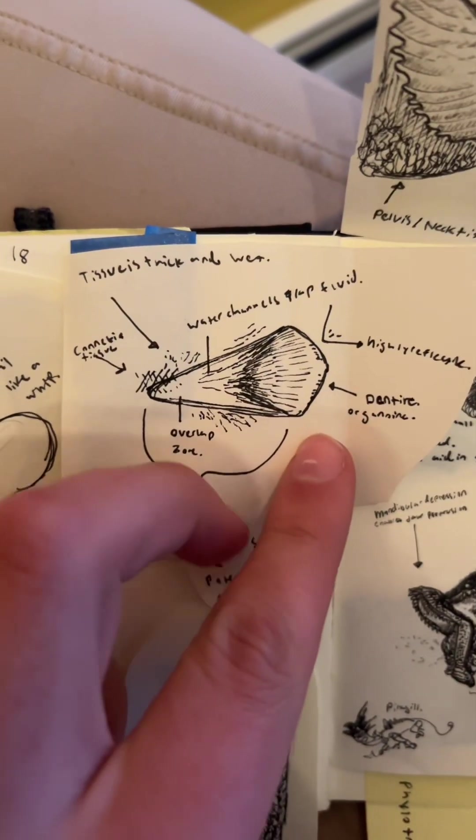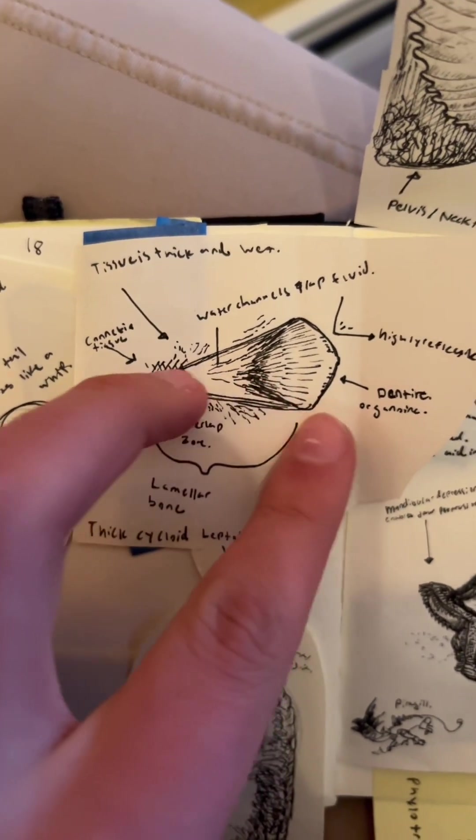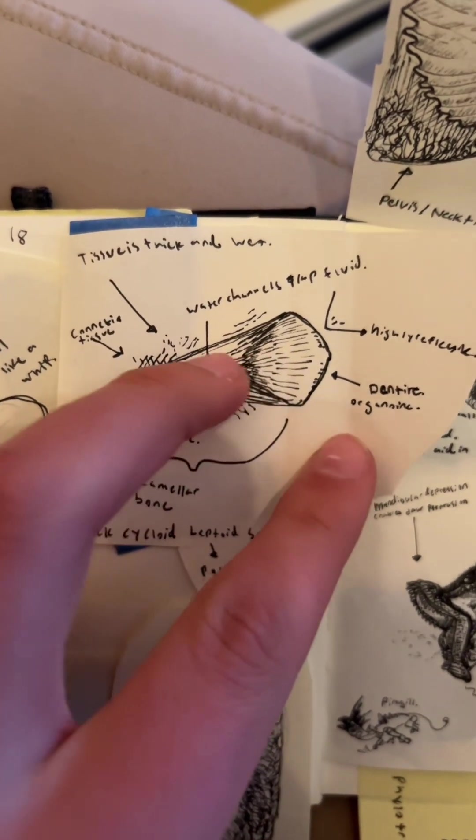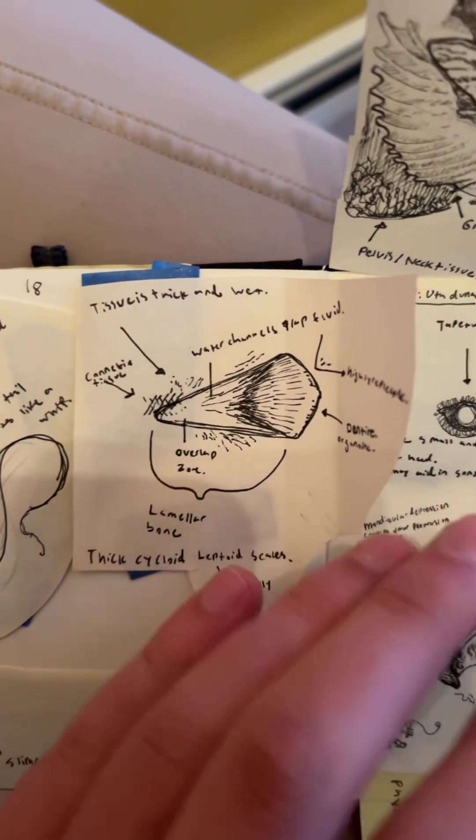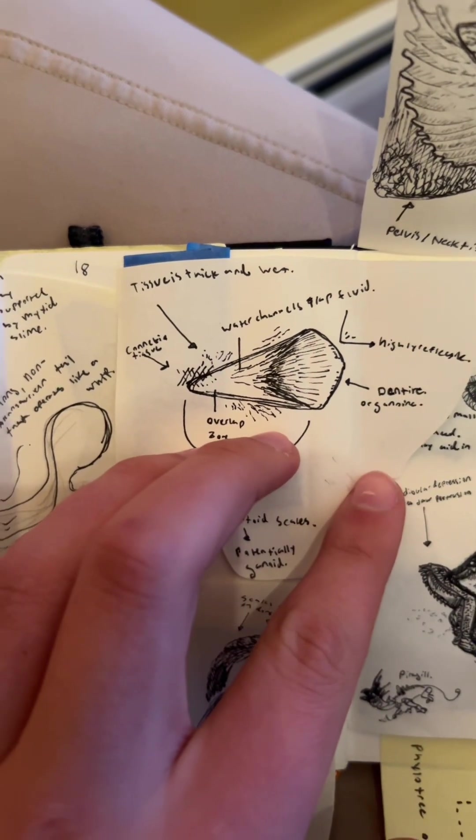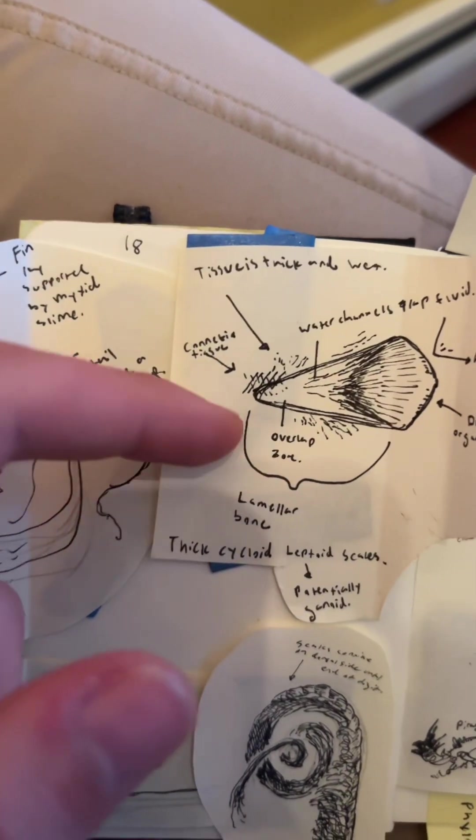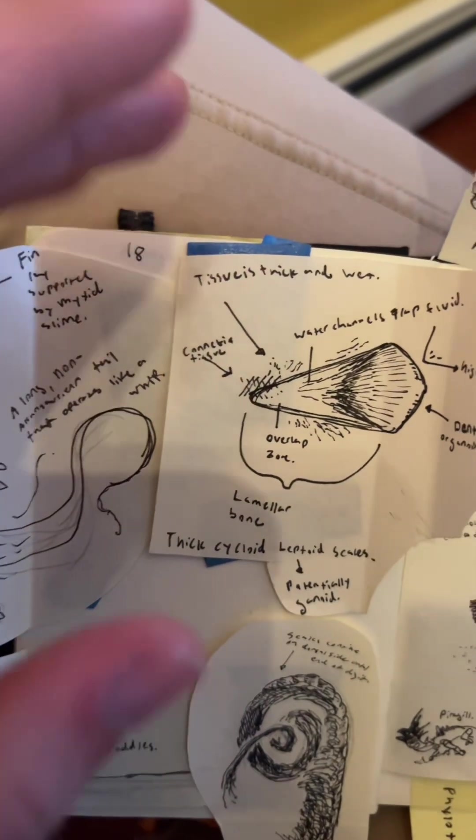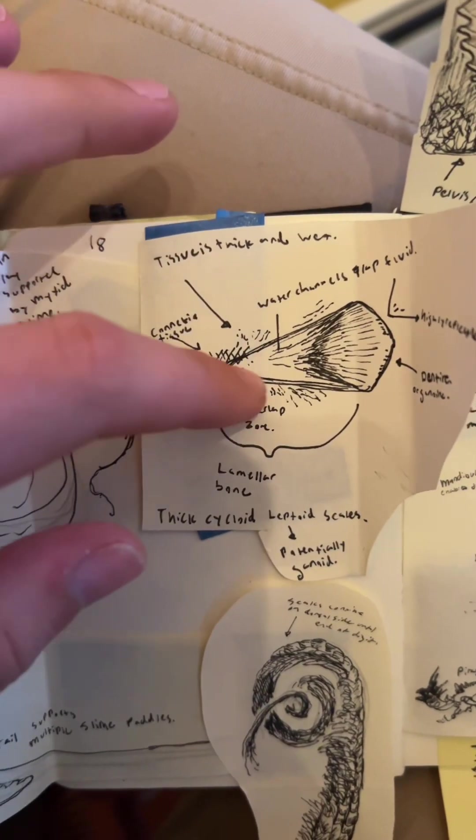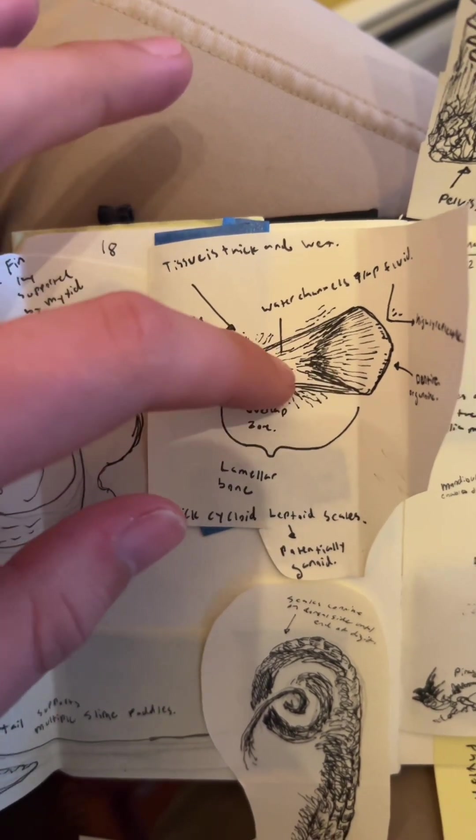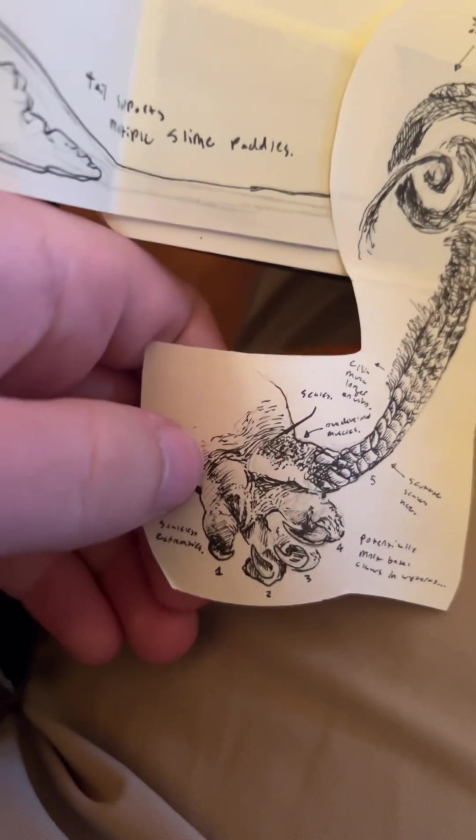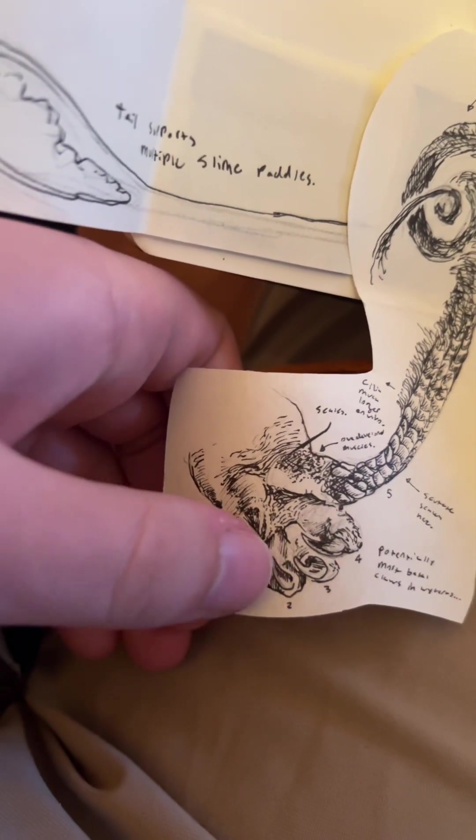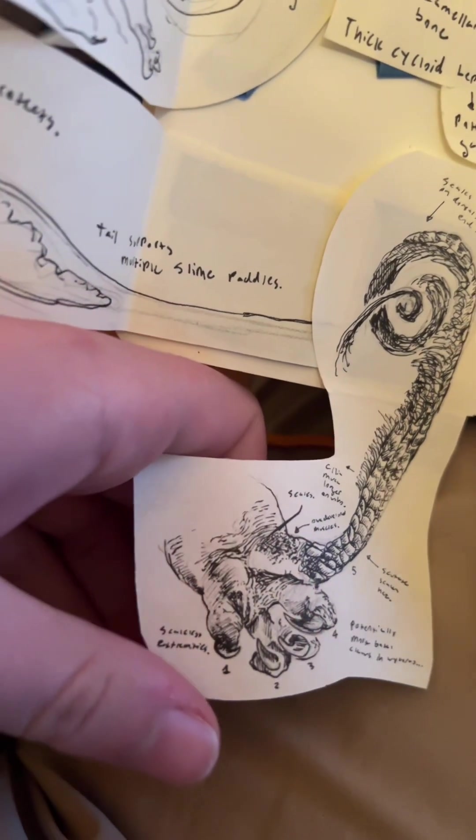One thing that it does mention specifically about the scales is that there are water channels that flow up through them and hold water to keep the animal's tissue moist. The tissue is described as being perpetually wet as long as the animal is alive, and also incredibly strong, which is probably due to this network of advanced crisscrossing connective tissue. What's worth noting is that not all of Uthduna's body is scaly.